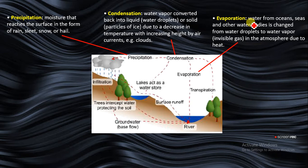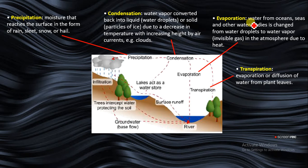Then we have transpiration. Transpiration has to do with evaporation or diffusion of water from plant leaves. When plant leaves lose water to the atmosphere, that process is transpiration.